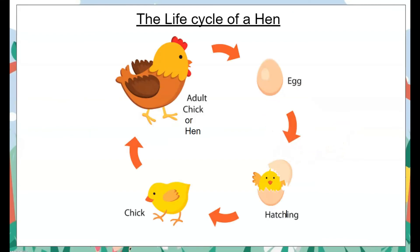Here we have the entire picture of the life cycle of a hen. The hen lays an egg, out comes the hatchling, the hatchling grows into a fluffy chick, and the chick grows into an adult hen.